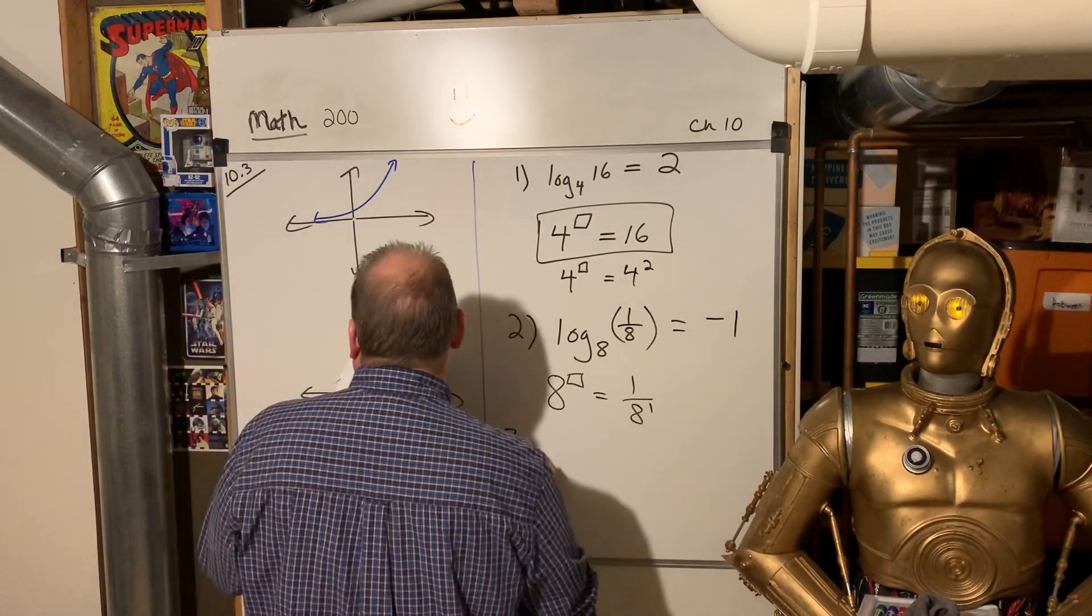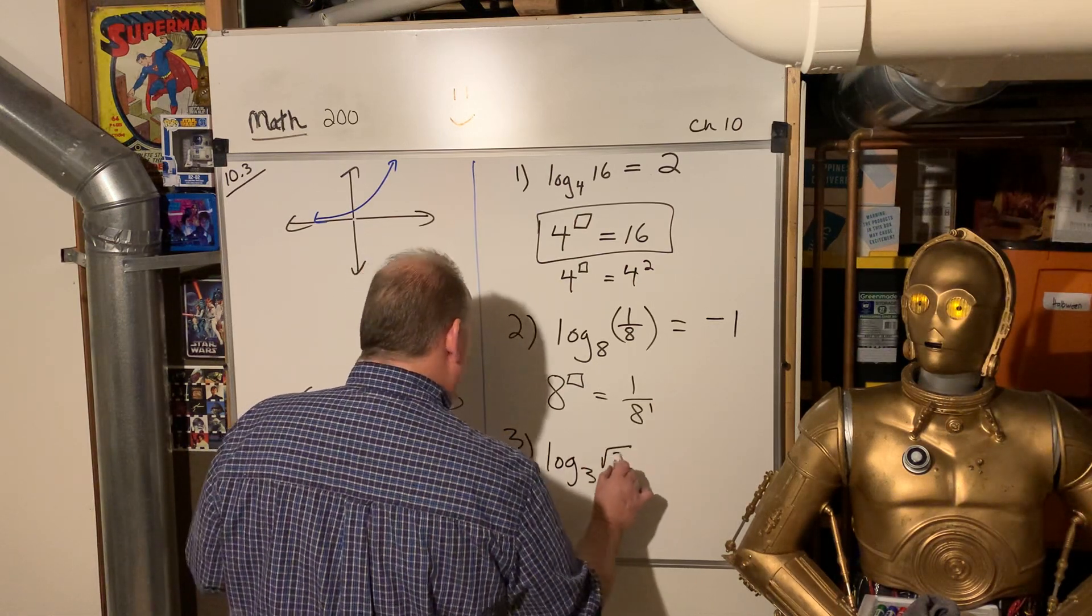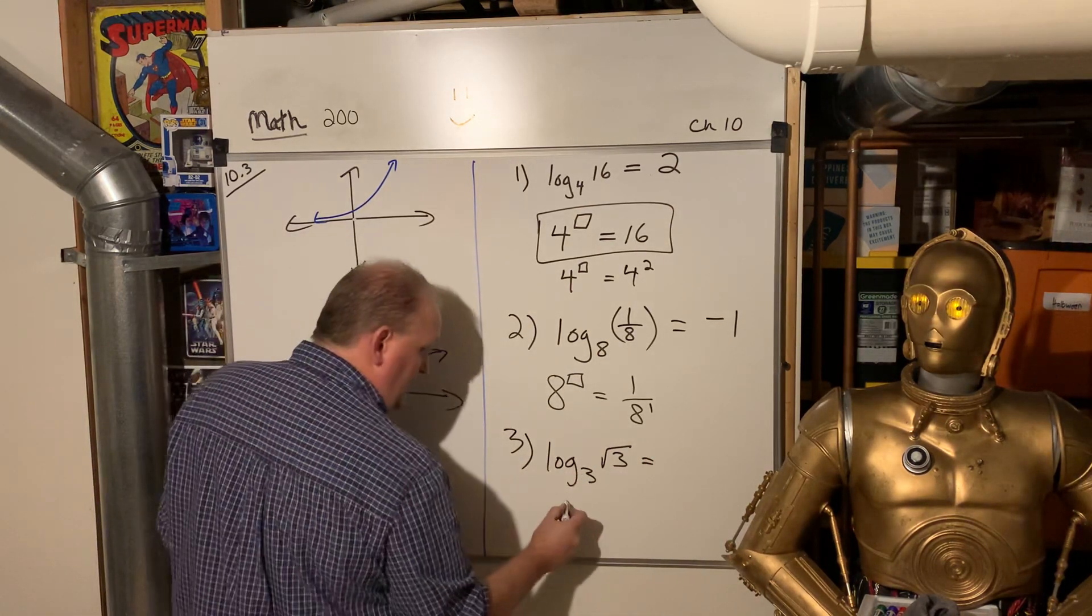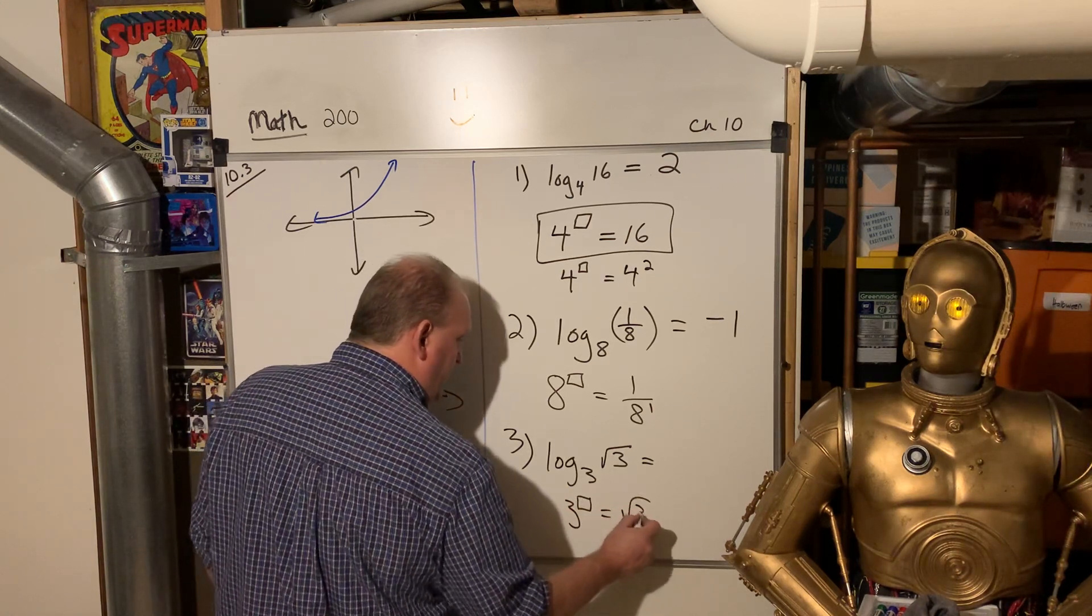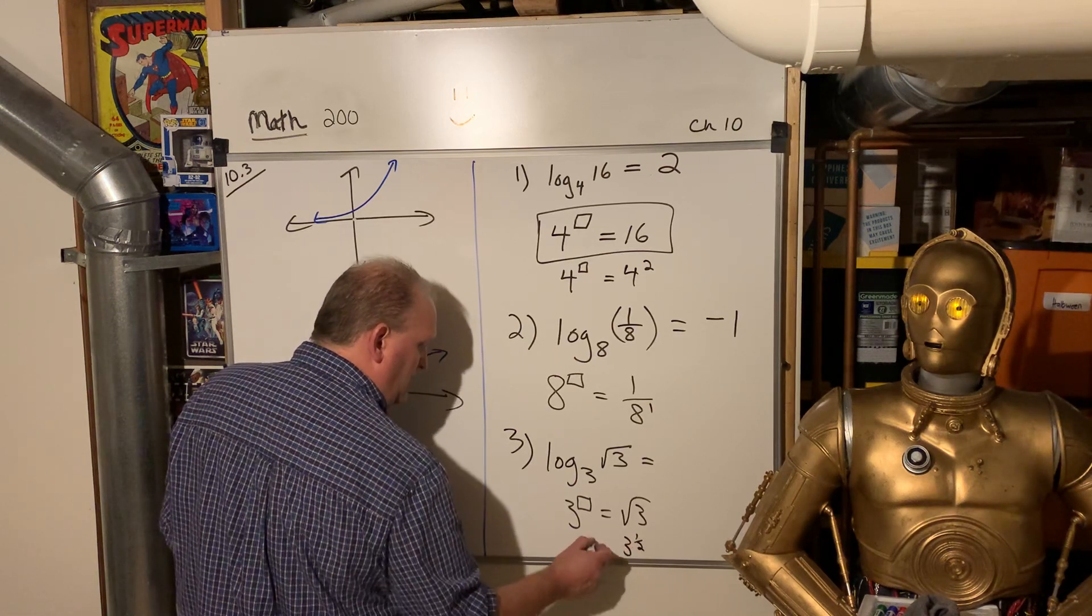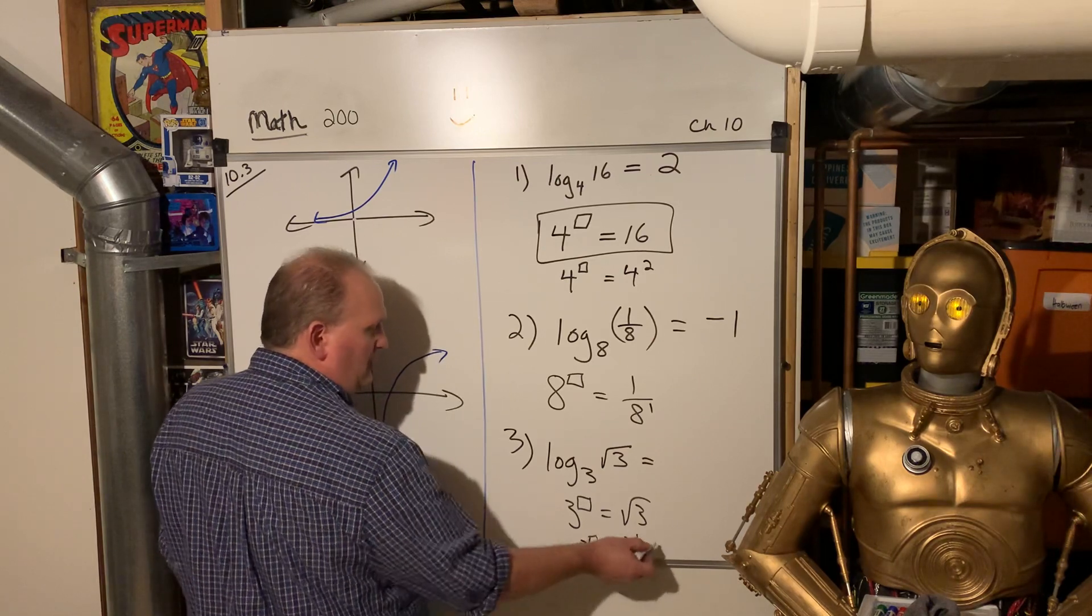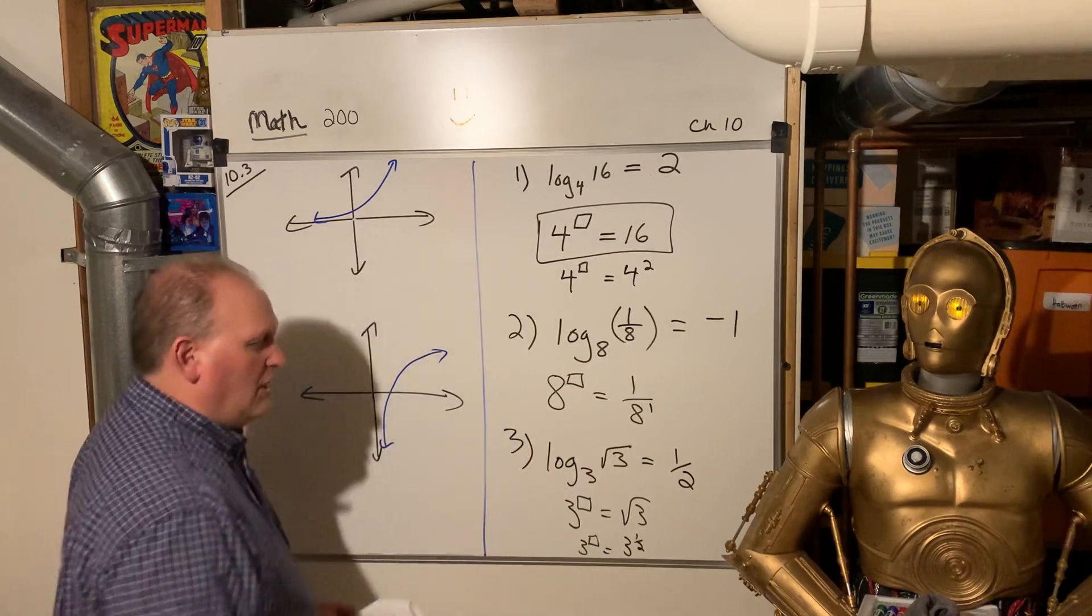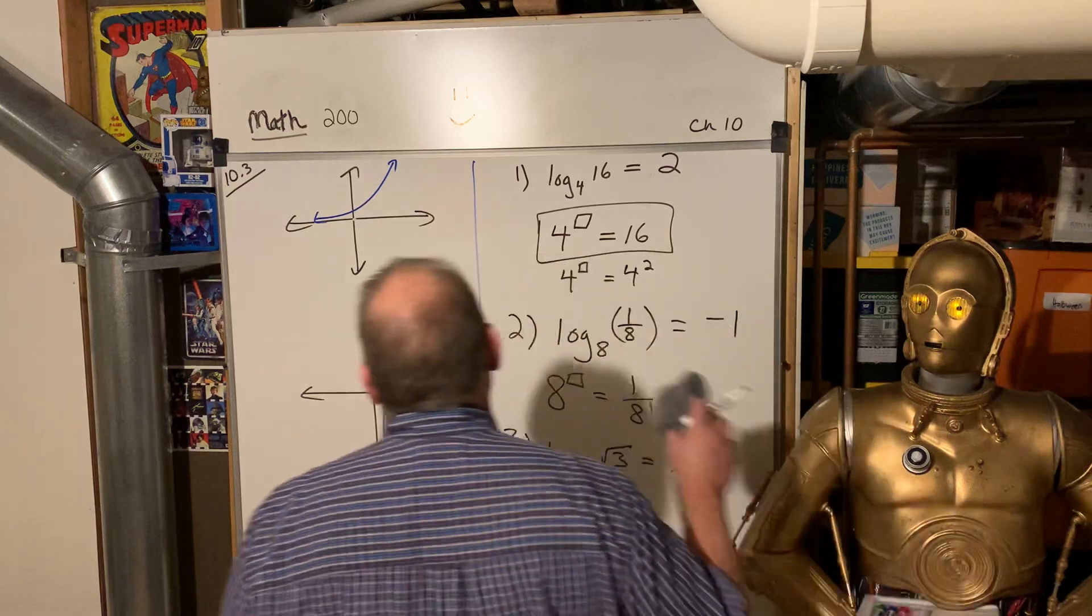Number three. Log base three of the square root of three is what? Well, now think again. This is three to what power gives me the square root of three. But remember, the square root of three can be expressed as three to the one half power. So that is three to what power gives me three to the one half power. That's just one half. All right. So logs are just kind of a fancy way of writing exponents. That's all.